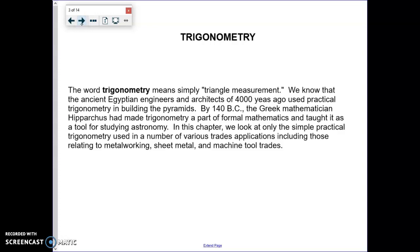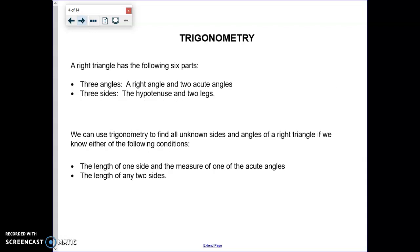Now, the word trigonometry just means studying triangle or triangle measurement. It dates back to the Greeks. The thing is about trigonometry, we're going to look at it with respect to right triangles. And remember, a right triangle has three angles and three sides. A right triangle has a right angle and two acute angles that are less than 90 degrees. It has three sides, a hypotenuse and two legs. Now, we can use trigonometry to find all unknown sides and angles of the right triangle if we know the following conditions: the length of one side and the measure of one of the acute angles, or the length of any two sides. So that's the nice thing about trigonometry - it allows you to find missing measurements by knowing only a few things about a triangle.